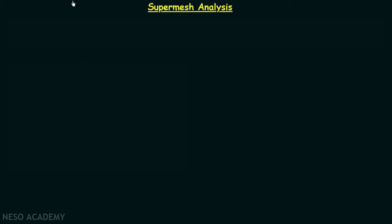In the last lecture we performed the mesh analysis when the current source was present in a separate mesh — that is, the current source was not shared by two meshes. Now in this lecture we are going to perform the mesh analysis when the current source is shared by two meshes, and this scenario is known as super mesh analysis.